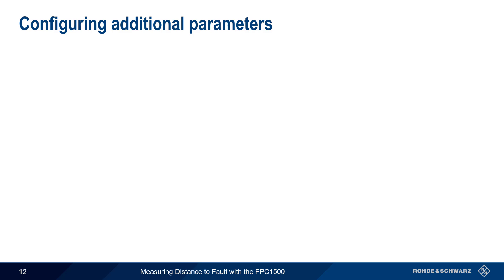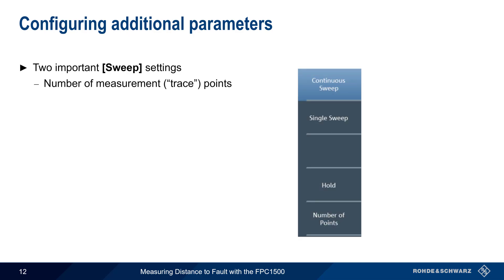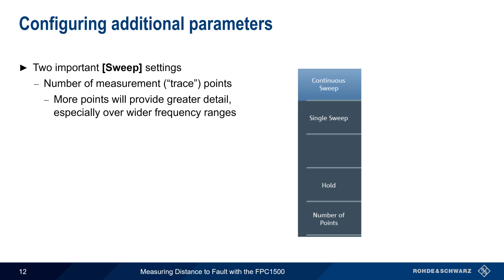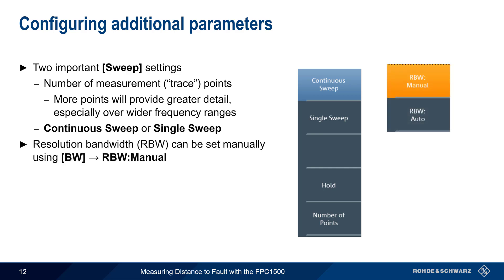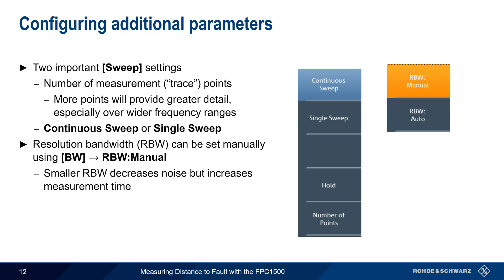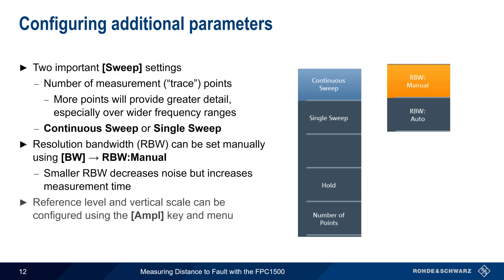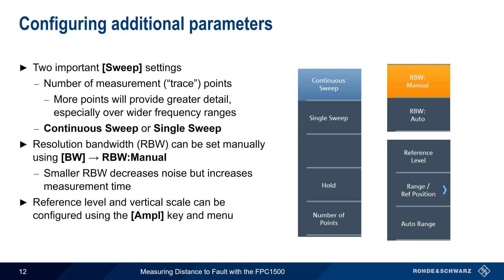There are a few additional parameters that can be configured. The Sweep hard key brings up two important settings: the number of measurement or trace points — more points provides greater detail, especially over wide frequency ranges — and toggling between the default continuous sweep and single sweep. An additional useful parameter is resolution bandwidth, which can be set manually using the Bandwidth hard key and RBW Manual. A smaller resolution bandwidth will decrease noise, but will also increase measurement time. Finally, the reference level and vertical scale can be configured by pressing the Amplitude hard key and adjusting the related parameters. Note that automatic scaling is also supported.